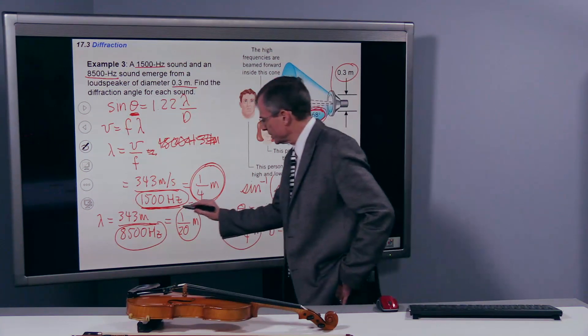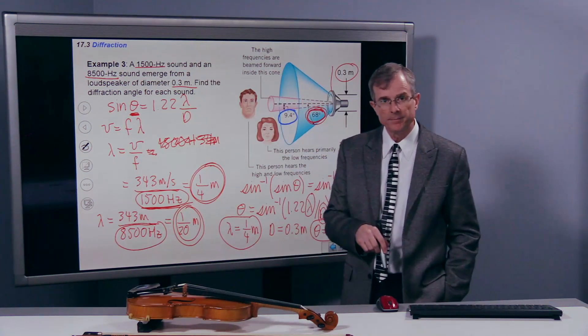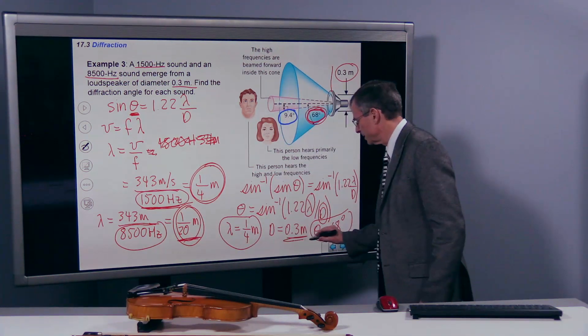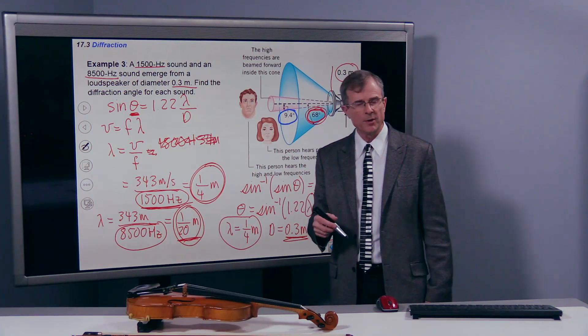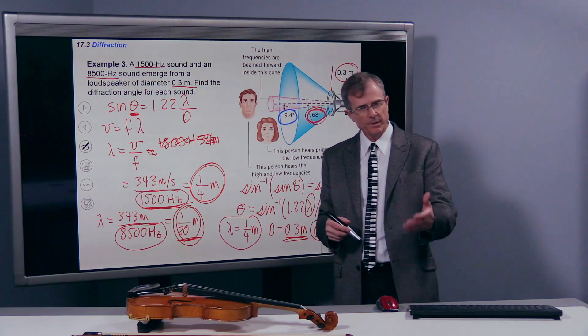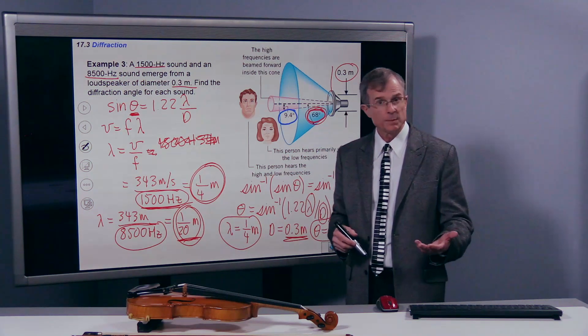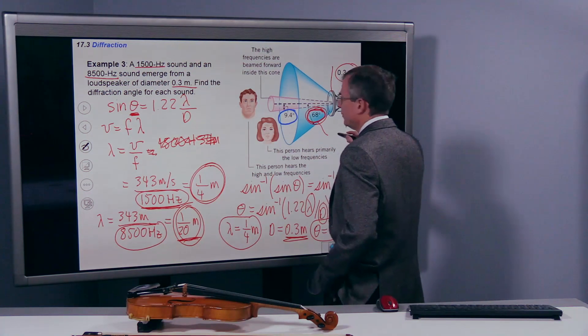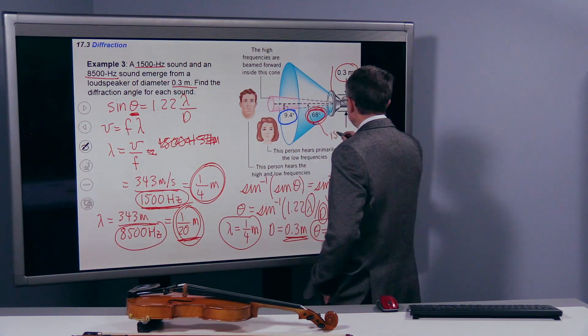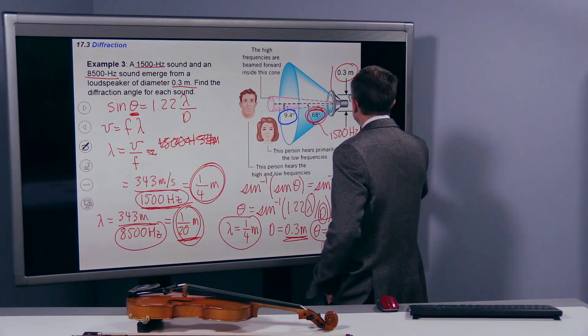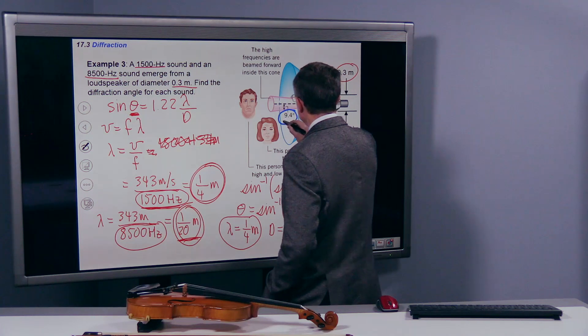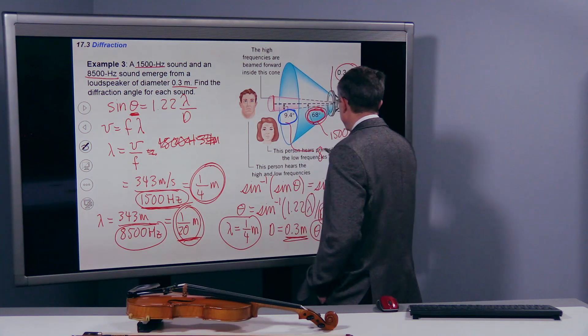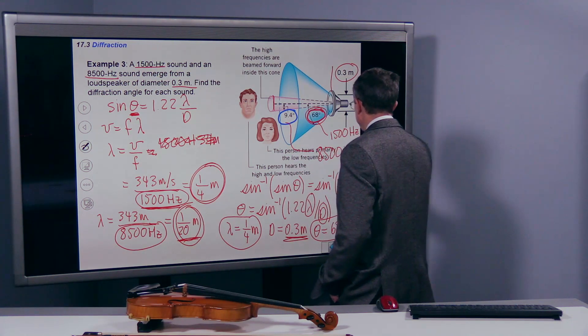When you plug in this much smaller wavelength, then that's definitely smaller. This wavelength is definitely smaller than this diameter. Are you going to expect less or more diffraction? Wavelength is small compared to the diameter, and you'll expect less diffraction. It's a high-pitched sound. So this is what we have for the 1500 Hz sound. And then this cone, this cone here, has an angle of 9.4 degrees. This is what we get for the 8500 Hz sound.